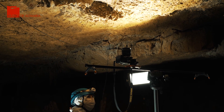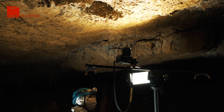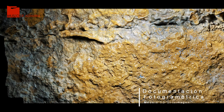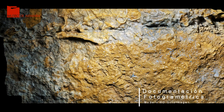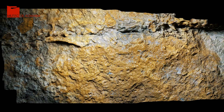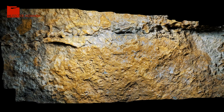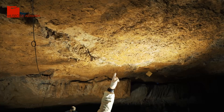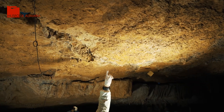El primer paso de esta metodología es, por lo tanto, la documentación fotogramétrica del área a estudiar. Para ello, se genera un modelo 3D y, a partir de este, una ortoimagen que nos permite saber, de manera precisa, la distribución de las colonias antes de intervenir.